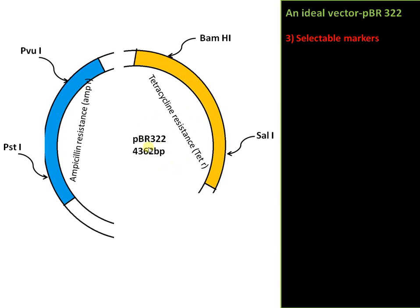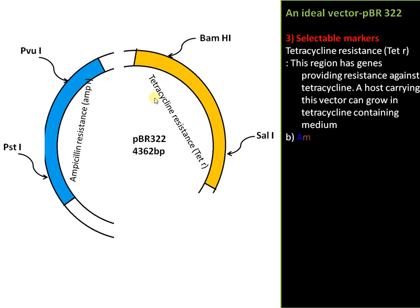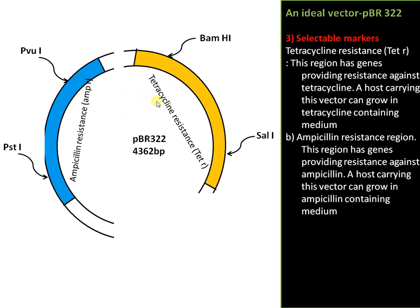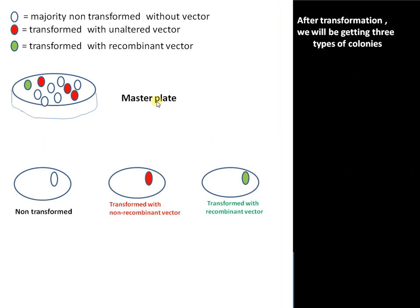The third major element is the selectable marker. There are two marker regions: the ampicillin resistance region, which contains genes that provide resistance to the host while growing in an ampicillin medium, and the tetracycline resistance region, which provides resistance against tetracycline in a tetracycline-containing medium.